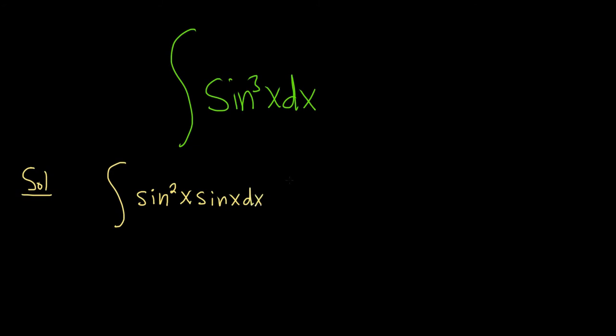So for powers of sine and cosine, if at all possible, save a copy of the one that's being raised to an odd power. So we did that. And since we've saved a copy of sine, u has to be the other one. So u is equal to cosine.